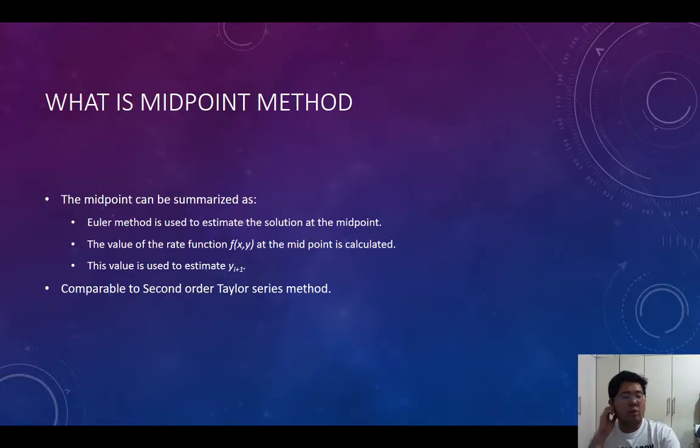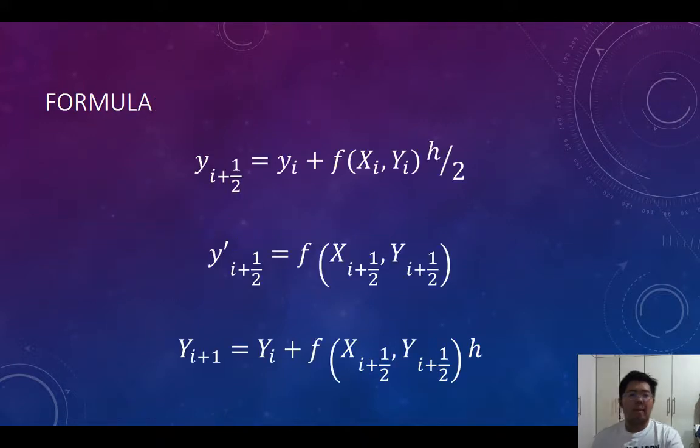What is the midpoint method? The midpoint can be summarized as follows: the Euler method is used to estimate the solution at the midpoint, the value of the rate function f(x,y) at the midpoint is calculated, and this value is used to estimate y_{i+1}. It is comparable to the second-order Taylor series method.